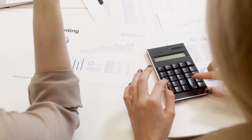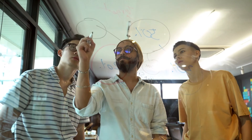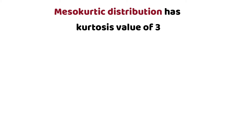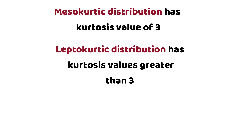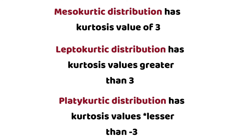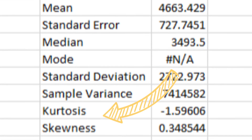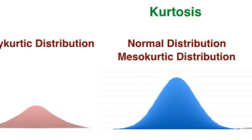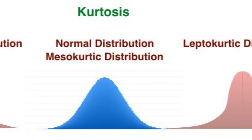Just as we have a number to define the skewness of a data set, we also have a number to quantify the kurtosis. This number ranges between minus three and plus three. For a mesokurtic distribution — a normal distribution — the kurtosis value equals three. For a leptokurtic distribution it is greater than three, and for a platykurtic distribution it is less than three. In Excel's descriptive statistics you'll see the kurtosis value change based on your data set — it can be minus three, minus four, and so on.